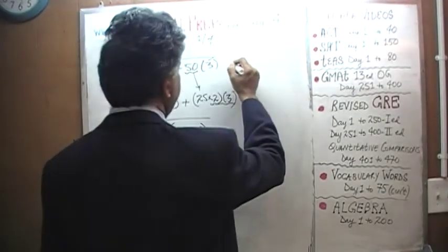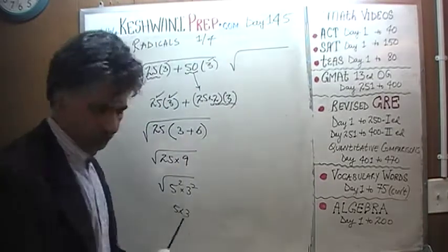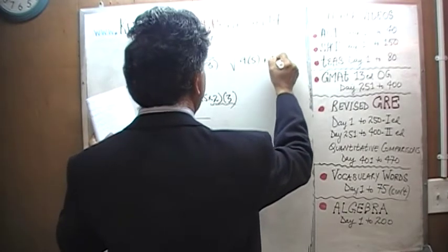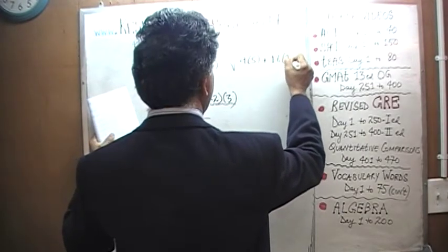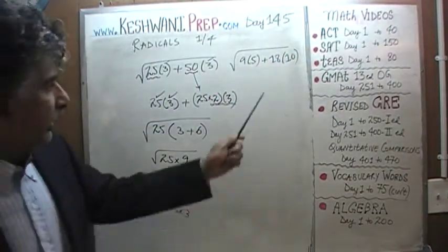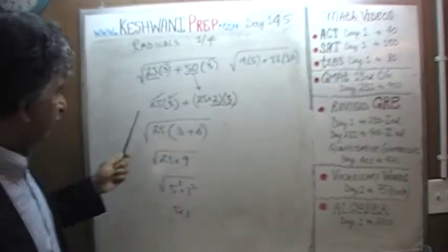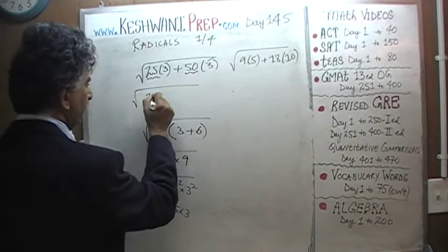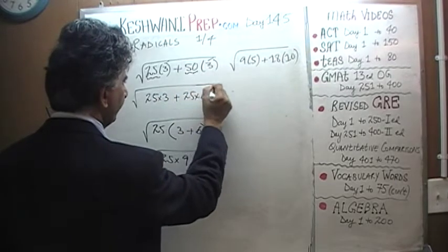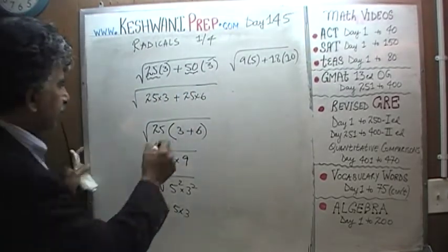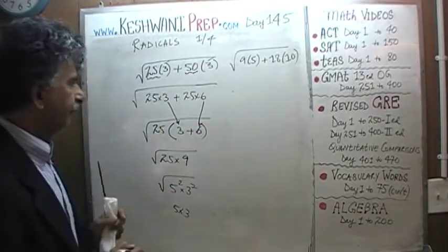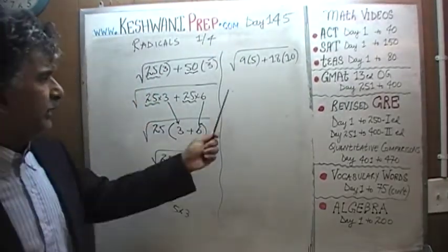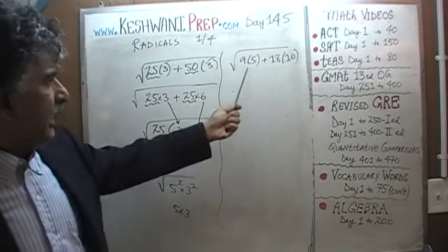Let's do one more on this side: the square root of 9 times 5 plus 18 times 10. I'll squeeze this to the side so it doesn't take too much room. The previous problem was the square root of 25 times 3 plus 25 times 6, where the 3 and 6 came out and 25 was the common factor. The same approach applies here. We have to find a perfect square — 9 is the perfect square.